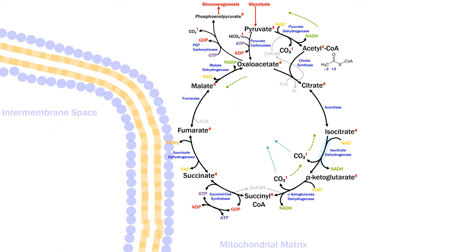From an oxidation number perspective, the carbons in acetyl-CoA have oxidation numbers of plus three and minus three (average zero), while intermediates in the cycle stay close to plus one. The important molecule is CO₂, with an oxidation number of plus four. Including the CO₂ carbons, the cycle goes from six carbons averaging plus one to six carbons averaging plus two and one-third — a significant increase. CO₂ diffuses away, pulling the reaction forward. If NADH or FADH₂ accumulate without being recycled, they inhibit the citric acid cycle and pyruvate dehydrogenase.